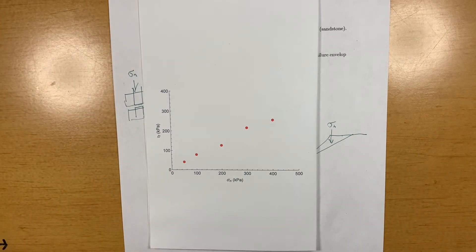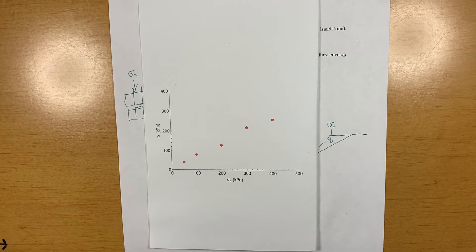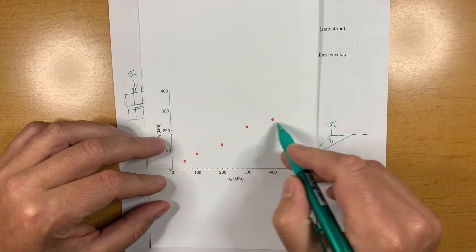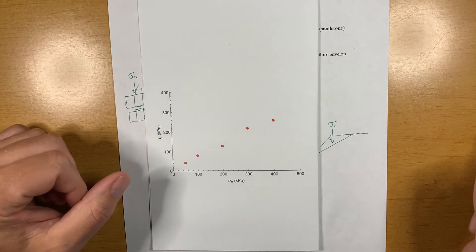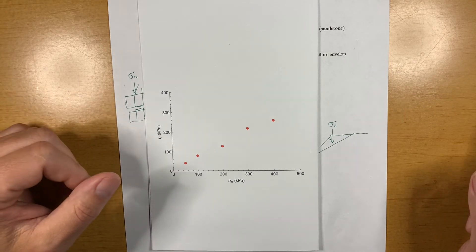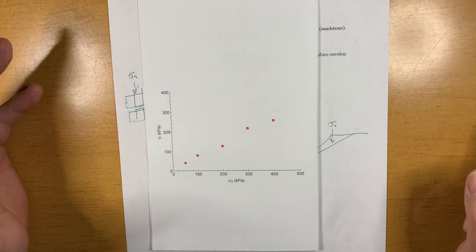What do we see so far? Well, it looks like we have a pretty good linear relationship going on here. And it seems that we should be able to pretty easily fit a best fit curve or a failure envelope.